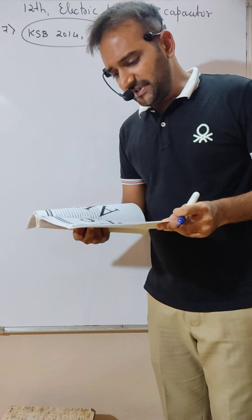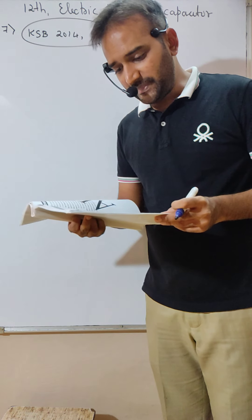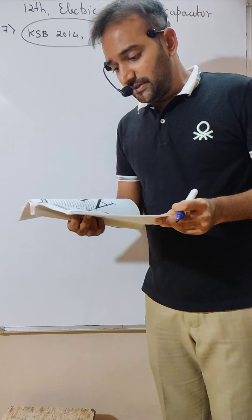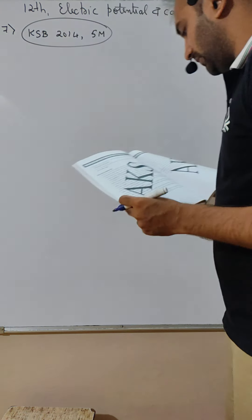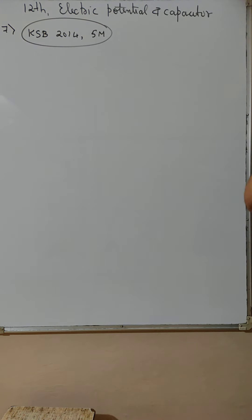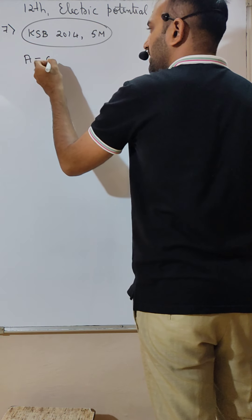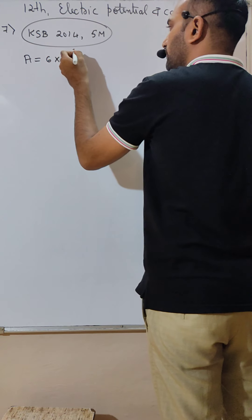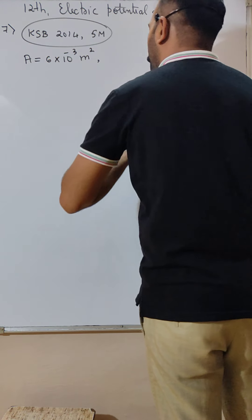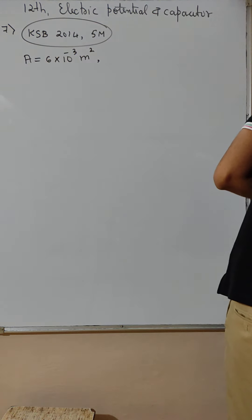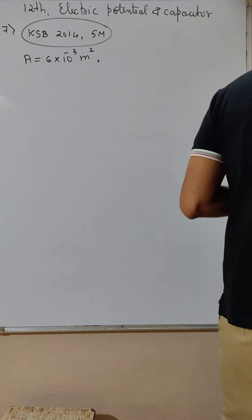Problem in a parallel plate capacitor. In a parallel plate capacitor, the plates have an area of 6 into 10 raised to minus 3 meter square, and the distance between them is 3 mm.